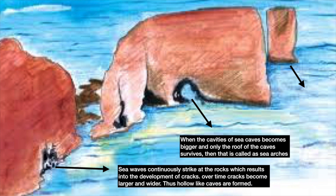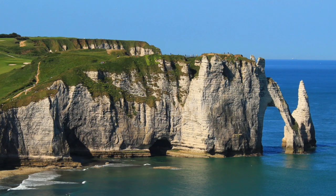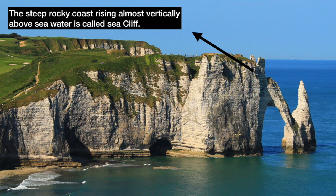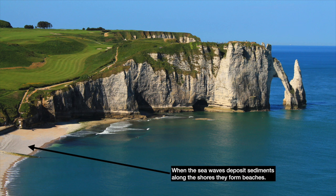There are also stacks. When sea waves further erode caves and break the roof and only the walls are left, it is called a stack. The steep rocky coast rising almost vertically above sea water is called a sea cliff. Finally, when sea waves deposit sediments along the shores, they form beaches, which are made of finely grained sand.